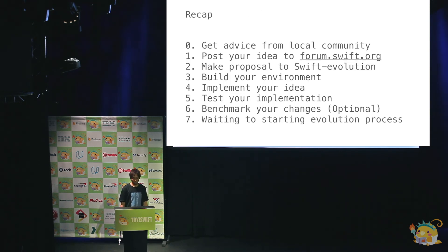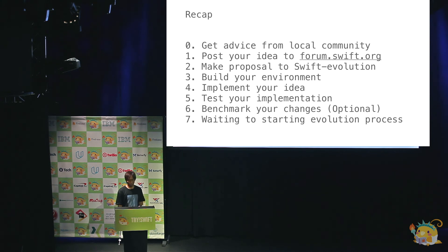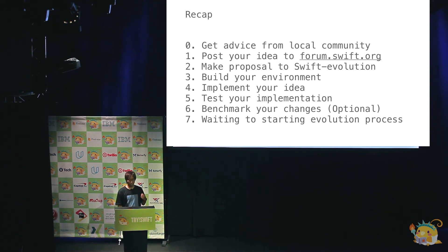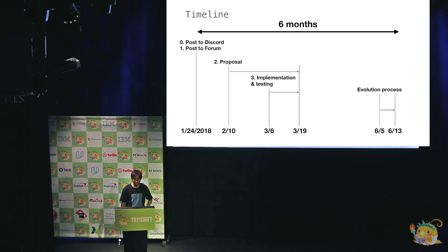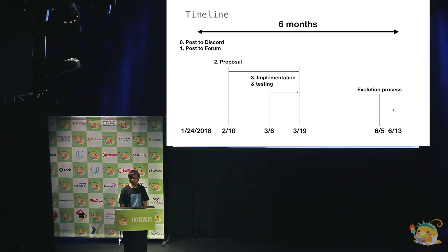Let me recap my talk. First, get advice from a local community. Then post your idea to forums.swift.org. Then make a proposal to Swift Evolution. Then build your environment to build Swift and do your implementation. Then testing and benchmarking. Then wait for the evolution process to start. My timeline: discussion started January 24th, implementation finished in March, but the evolution process didn't start until June. I'm not sure why, but it took about half a year to get the proposal accepted.